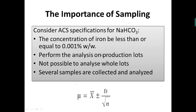You take all the individual values and calculate the mean value. The true value, denoted by μ (nu), has a confidence interval: μ = x̄ ± t·s/√n. This equation says the true value — the amount of iron in the ACS sodium bicarbonate bottle — lies within the confidence interval x̄ ± t·s/√n, where x̄ is the mean percentage of iron obtained by individual analyses.